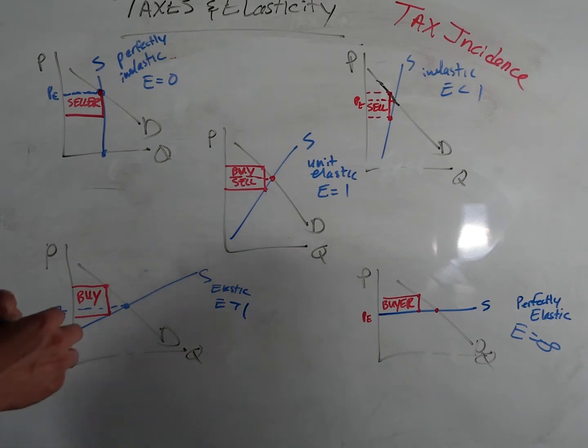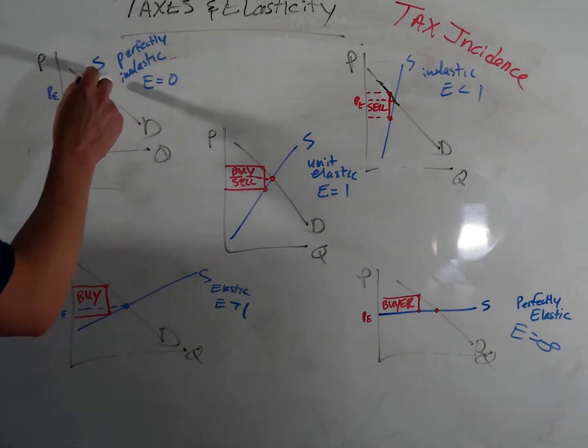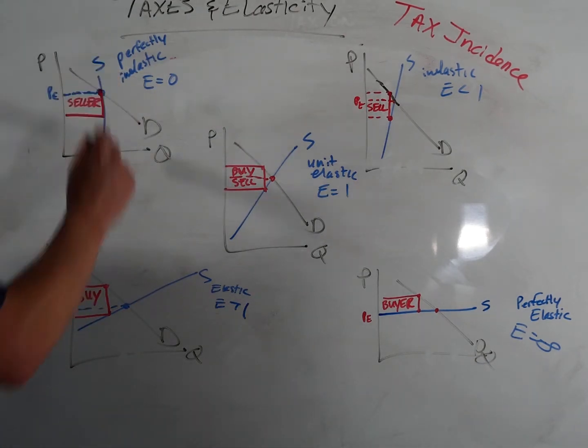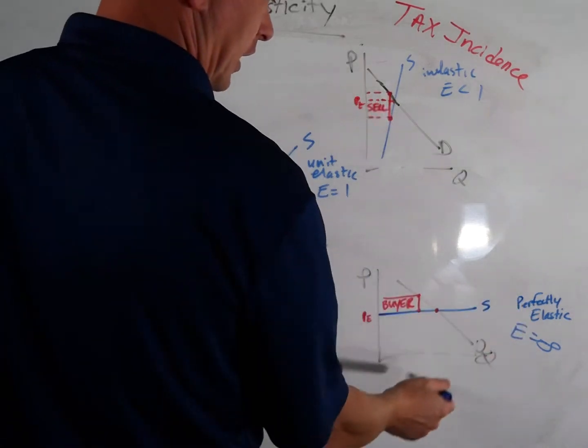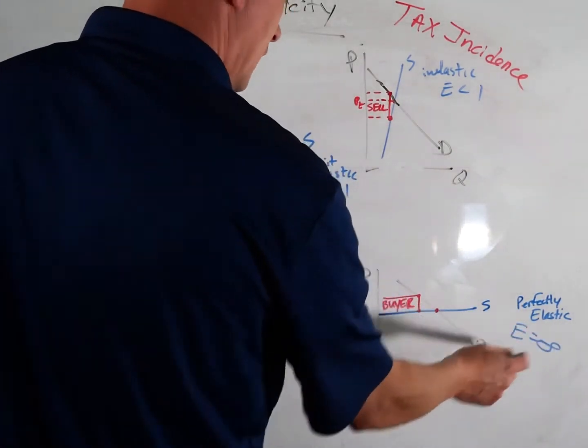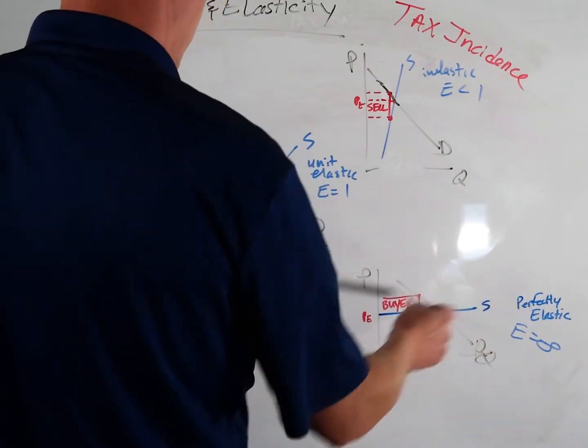I have drawn five different versions of a supply curve here. Every demand curve you see is relatively unit elastic. So when we have a perfectly inelastic supply curve, it's just vertical. When we have a perfectly elastic supply curve with an elasticity score of infinity, it's perfectly horizontal.